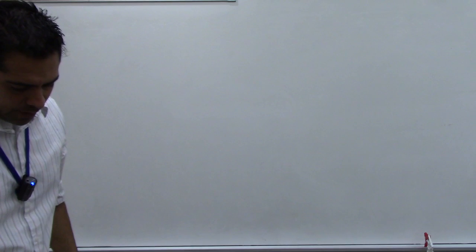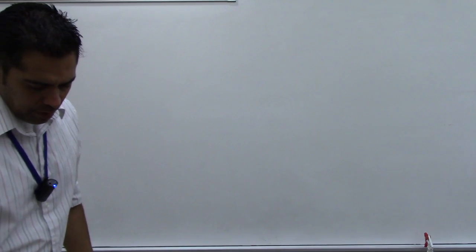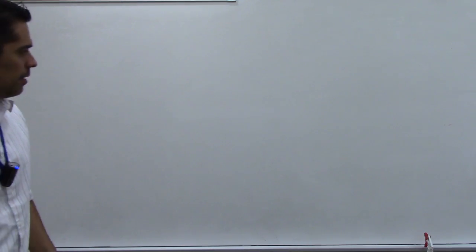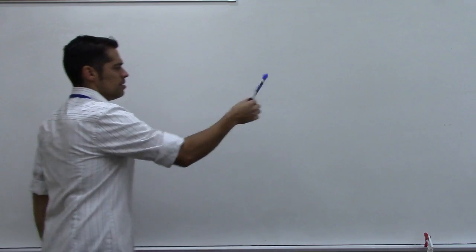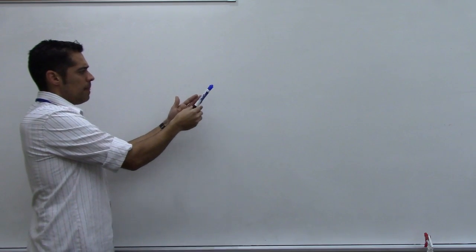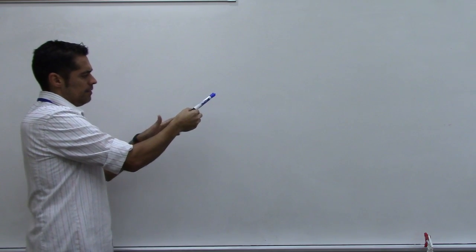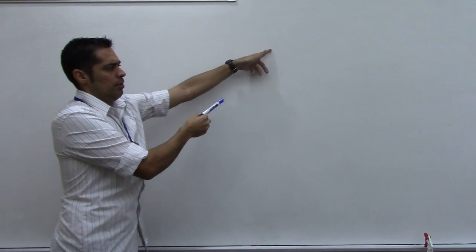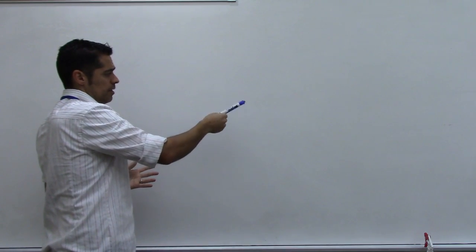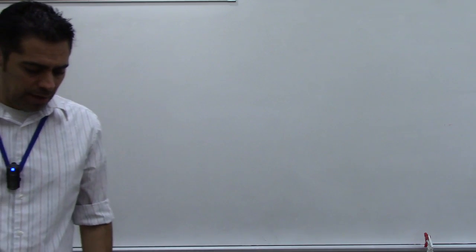Part K: a plane and a line either intersect or are parallel. I can run a line off the board so it's parallel to the plane, or I can tilt the line slightly so it punches through the plane. There's no other possibility — they're either going to be parallel or they'll hit each other. So the answer is true.